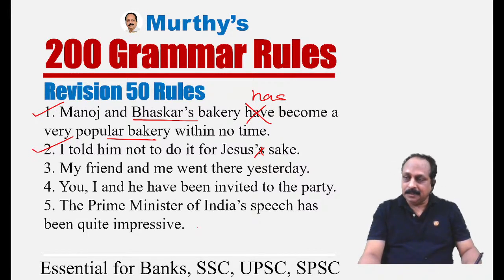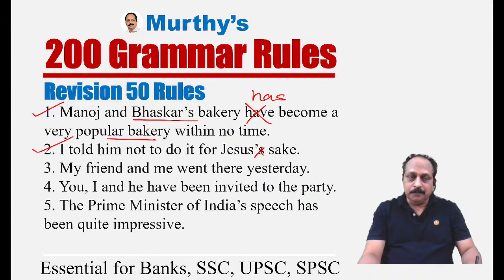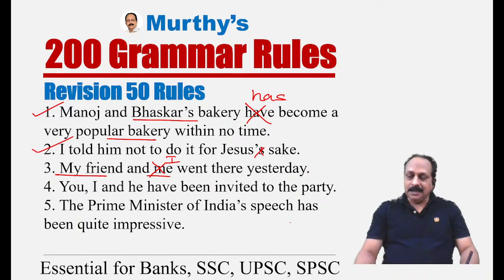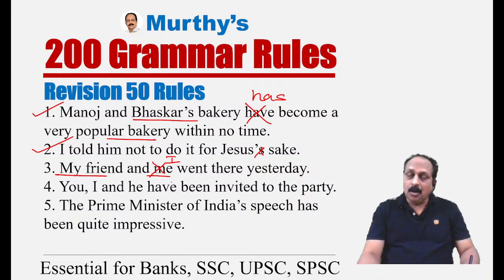Sentence three: 'My friend and me went there yesterday.' The pronoun here is in the subject position. When a pronoun is in the subject position, we must use the subject form — we cannot use the object form. 'Me' is an object form. The correct sentence is: 'My friend and I went there yesterday.' First person singular subject form is 'I.'